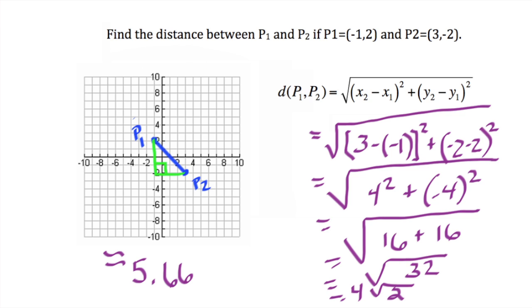When we connect the two points, we can see that if we form a triangle, we make a right triangle. So notice that the distance between p1 and p2 is the hypotenuse of the right triangle formed when we extend the lines in this example.